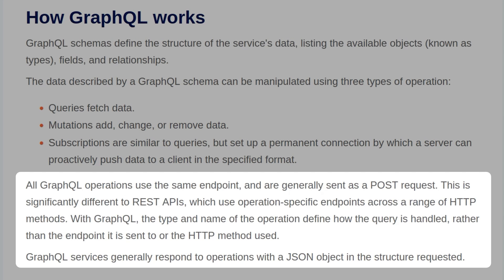All GraphQL operations use the same endpoint, which are generally sent as a POST request. This is significantly different to REST APIs, which use operation-specific endpoints across a range of HTTP methods. With GraphQL, the type and name of the operation define how the query is handled, rather than the endpoint it is sent to or the HTTP method that's used.